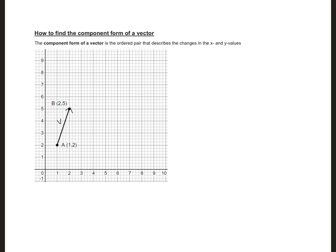So how do we find the component form? To find the component form we just need to take the coordinates given. So I'm going to write the coordinates of A, and the coordinates of A are 1, 2, and the coordinates of B are 2, 5.